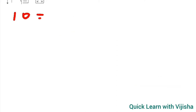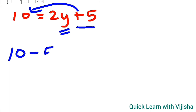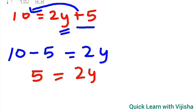The second question is 10 is equal to 2y plus 5. We need to find the value for y. The number plus 5 is taken to the left side, so it becomes 10 minus 5, which gives 5. What remains on the right side is 2y.